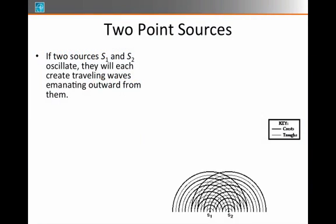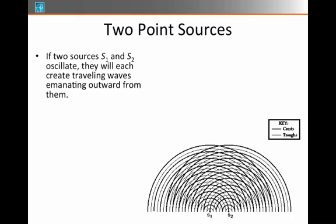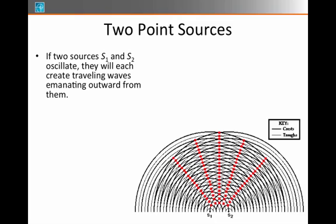If we imagine two point sources, S1 and S2, that are oscillating, they will each create traveling circular waves heading out from them.